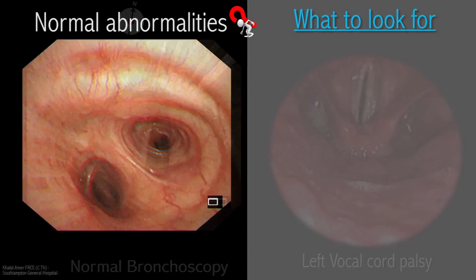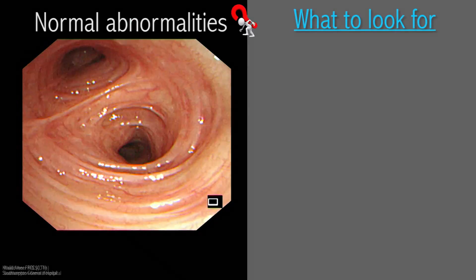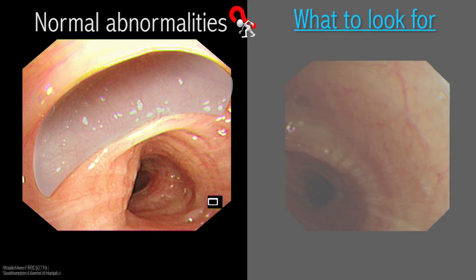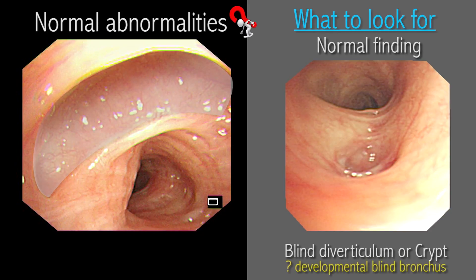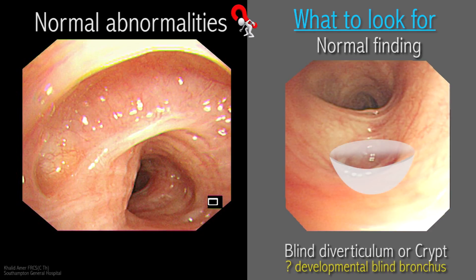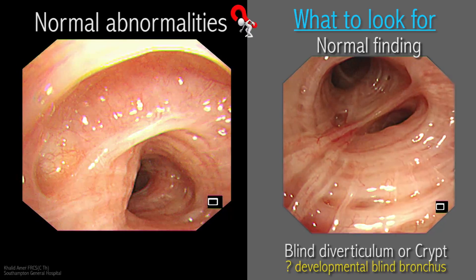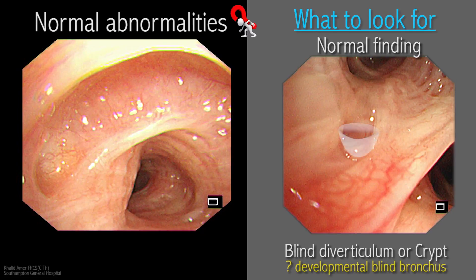The normal-looking bronchial mucosa is sometimes seen to be interrupted by small crypts and diverticulae, which vary in shape and length. These crypts represent arrested development or blind ends of bronchi that did not proceed to full-length development. This is a normal finding, does not merit reporting, and should not be confused with a fistula track.